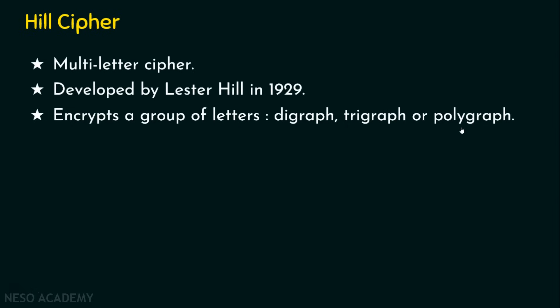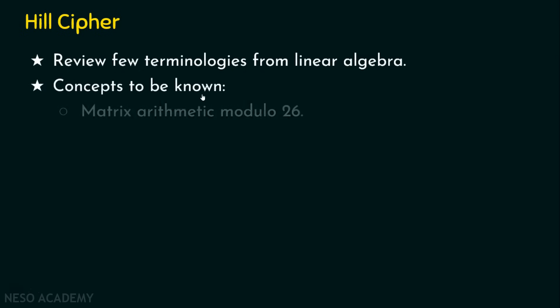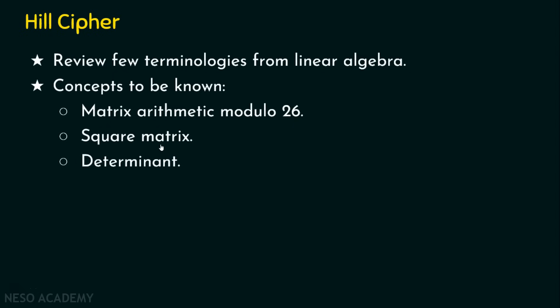Before stepping into Hill Cipher, we need some mathematical background. Let's review a few terminologies from linear algebra. The concepts to be known are: matrix arithmetic modulo 26, square matrix (where the number of rows equals the number of columns, e.g., 2×2, 3×3, or 4×4), determinant, and multiplicative inverse. For solving Hill Cipher encryption, basic matrix arithmetic modulo 26 is sufficient.